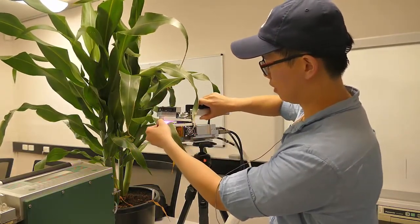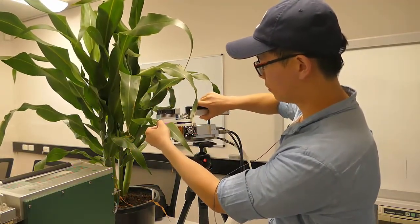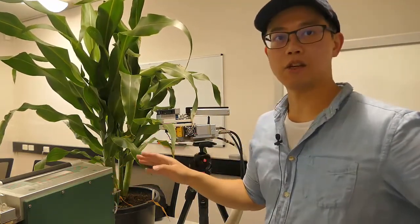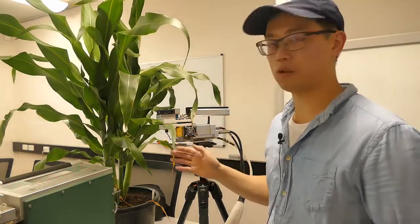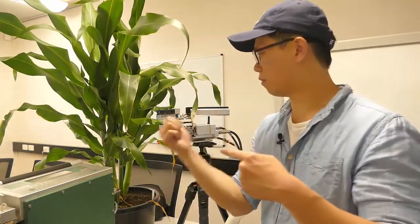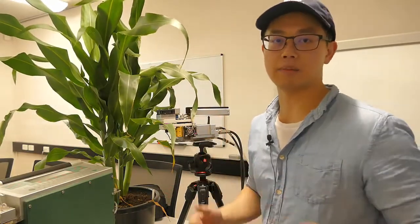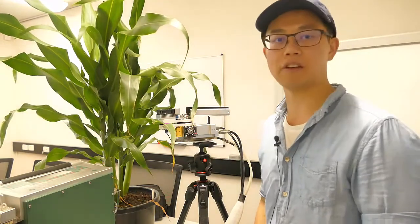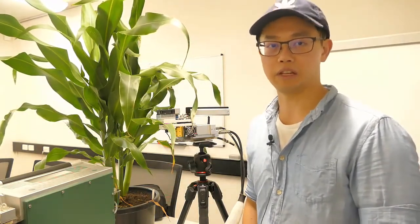Then what the machine does is it measures the change in the CO2 concentration and water vapor from the machine and out from the chamber. This way the machine can calculate and detect the differences in concentration and calculate photosynthesis and transpiration.